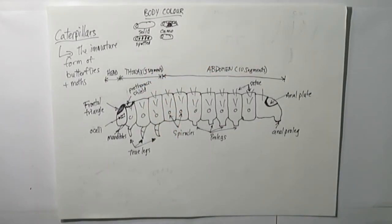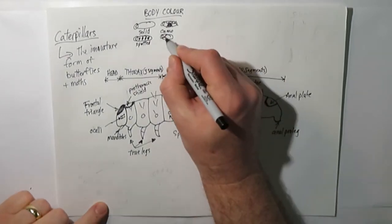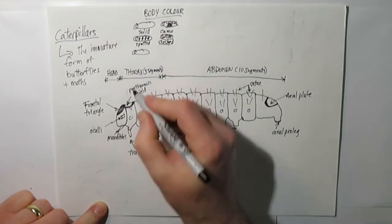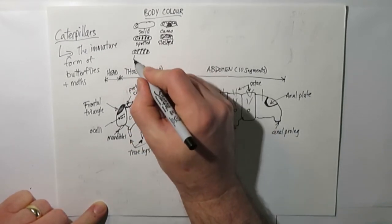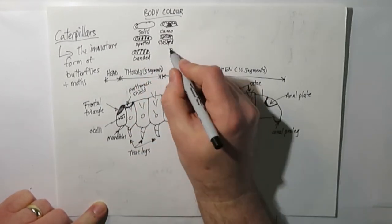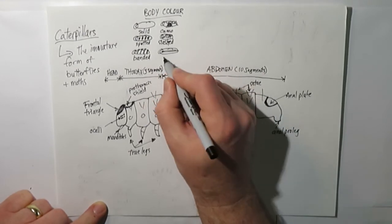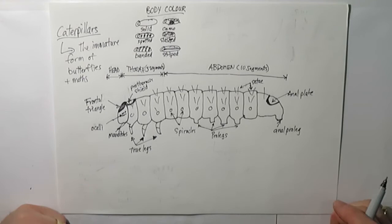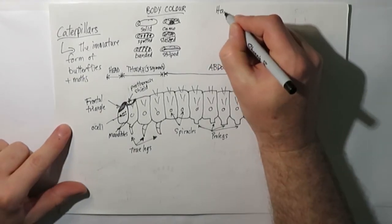They might be spotted. They might be what's referred to as slashed, which has sort of diagonal striping. Then there's also one called banded where you'd have patterns of vertical stripes that run down the body, and then there's striped ones that run horizontally down the length of the body.